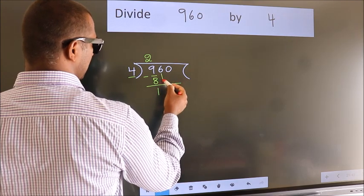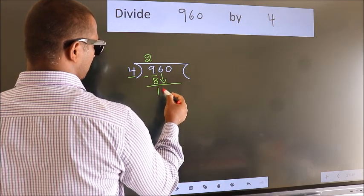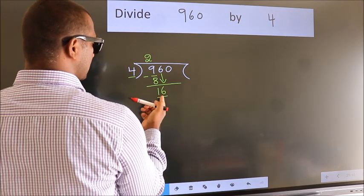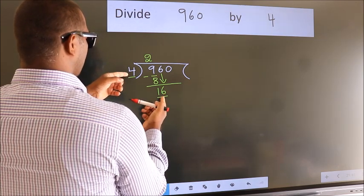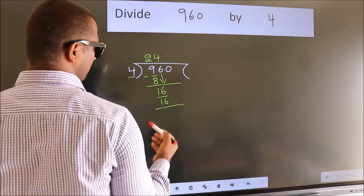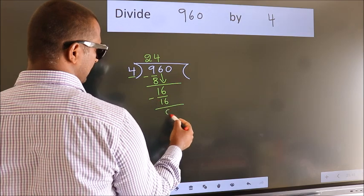After this, bring down the beside number. So, 6 down. So, 16. When do we get 16? In 4 table. 4 fours, 16. Now, we subtract. We get 0.